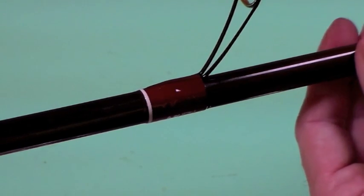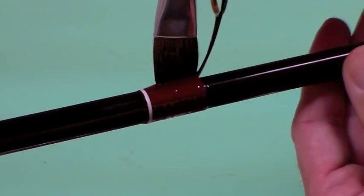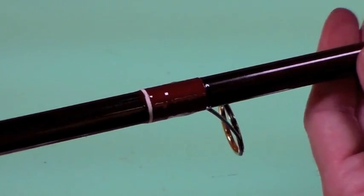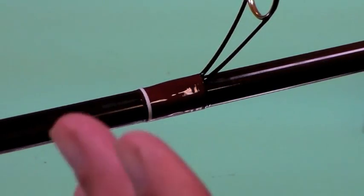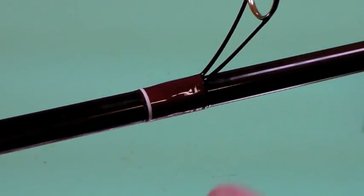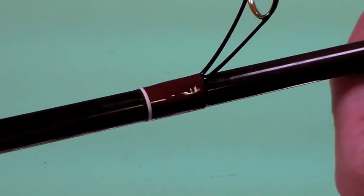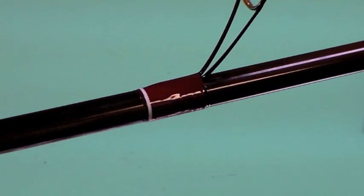I normally stand directly in front of the guide wrap when I do this, but I'd be in the way of the camera. Okay, that guide wrap is done. We just finished it and this is going to be perfect in two or three minutes when that finish levels out. We're not going to do anything else to it. Let me reset the camera and we'll do a double foot guide so you can see how that works.